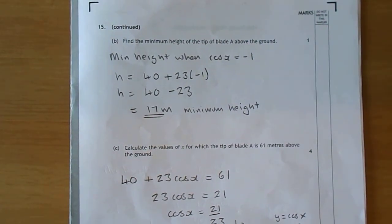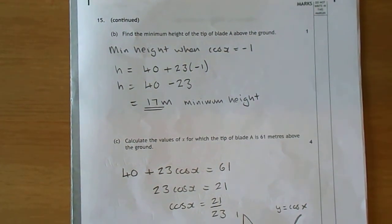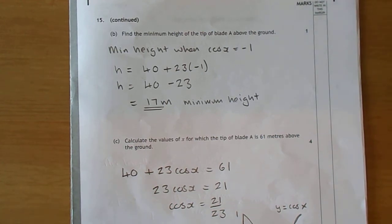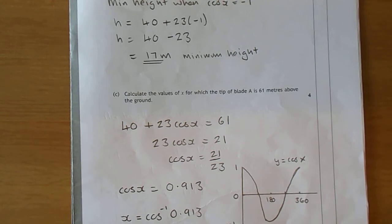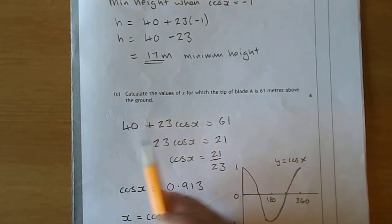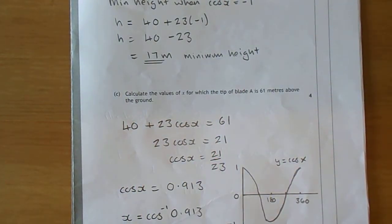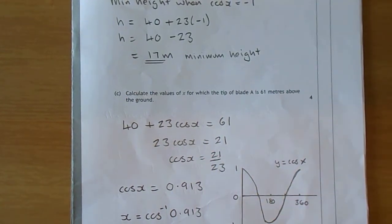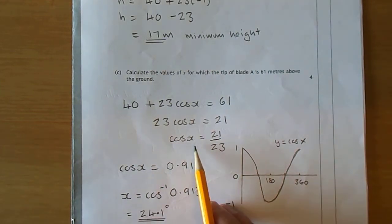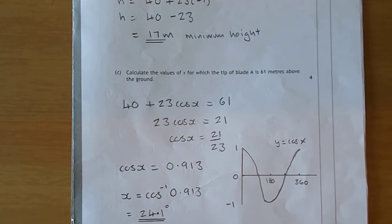Part C, the last question: Calculate the values of x for which the tip of the blade is 61 meters above the ground. We want h to be 61, so 40 + 23cos(x) = 61. Take 40 from both sides, so 23cos(x) = 21. Therefore cos(x) = 21/23, which is 0.913.